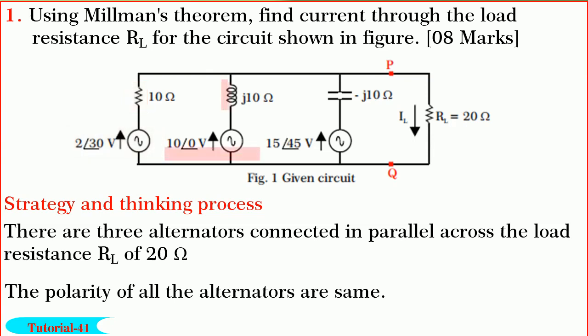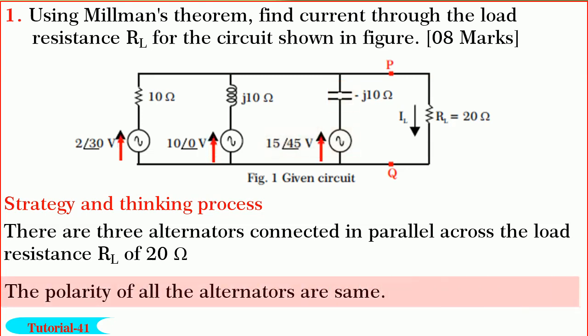Another alternator is of 10∠0 volts with an internal impedance of j10 ohm. Yet another alternator is of 15∠45 volts with an internal impedance of minus j10 ohm. Also observe that the polarity of all the alternators is the same.